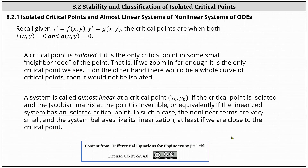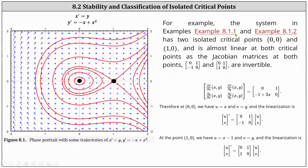Let's look at some examples. Back in examples 8.1.1 and 8.1.2, we considered the system x prime equals y and y prime equals negative x plus x squared, and the phase portrait is graphed below. Recall there were two critical points: zero comma zero and one comma zero. Both of these critical points are isolated. If we zoomed in around these critical points, we would not find any additional critical points near them.